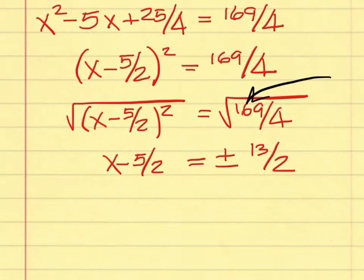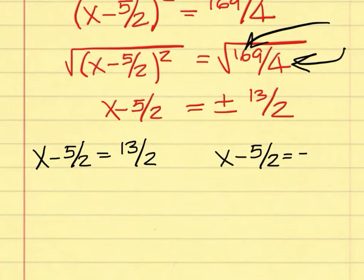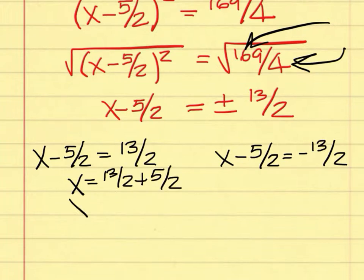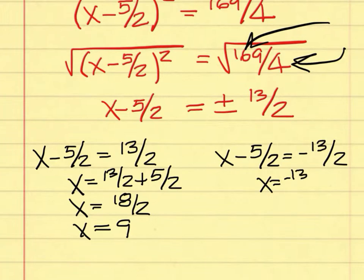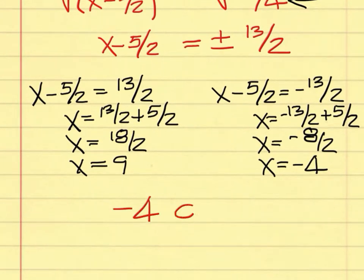Once you reach this point, you have two equations to solve. x minus 5 over 2 equals 13 over 2. On the left: 13 over 2 plus 5 over 2 is 18 over 2, which simplifies to 9. On the right: negative 13 over 2 plus 5 over 2 is negative 8 over 2, which simplifies to negative 4. So the answers are negative 4 or 9.